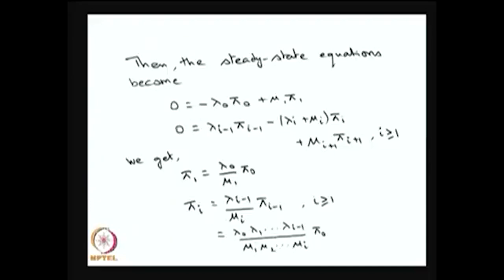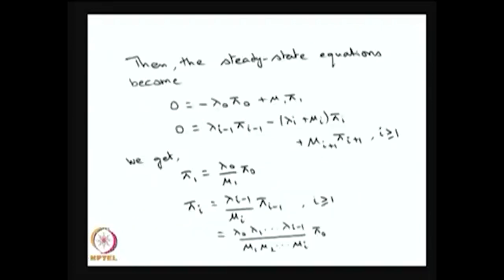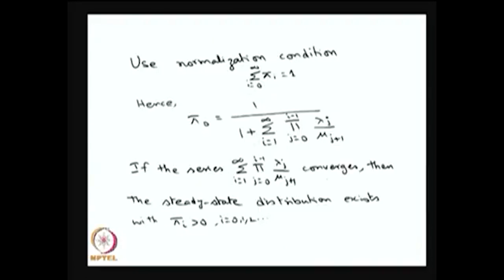From this homogeneous equation I can recursively express pi_i's in terms of pi_0. The second equation gives pi_2 in terms of pi_1, and then pi_1 in terms of pi_0, so recursively I can get all pi_i's in terms of pi_0 for all i greater than or equal to 1. Using the normalizing condition — summation of pi_i equals 1 — I get pi_0 equal to 1 divided by the summation of product-form terms. As long as the series converges, pi_0 is positive and all pi_i's are determined with their sum equal to 1.